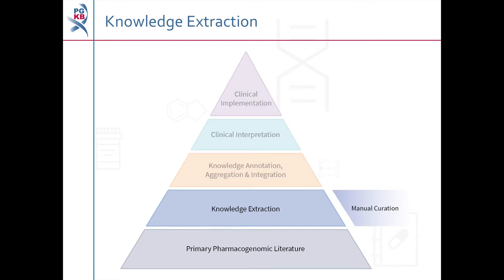Research published by researchers and clinicians in the field of pharmacogenomics forms the primary pharmacogenomic literature, the base of the PharmGKB Knowledge Pyramid. Our scientific curators read the literature and use manual curation to extract relationships between genes, drugs and diseases from published research. This is the knowledge extraction step of the pyramid.